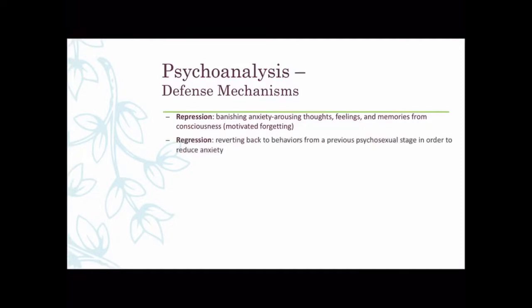The next is regression — going back to old behaviors from a previous psychosexual stage to reduce anxiety. Defense mechanisms and fixations are used to decrease anxiety. For example, a school-aged boy who had been weaned from thumb-sucking might start sucking his thumb again when feeling anxious, like on the first day of school. That's retreating to the oral stage. Retreating to the anal stage could involve constipation or uncontrollable bowel movements in response to anxiety — gastrointestinal issues in response to anxiety are pretty common.